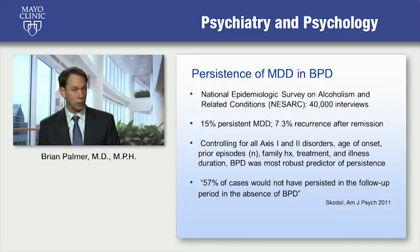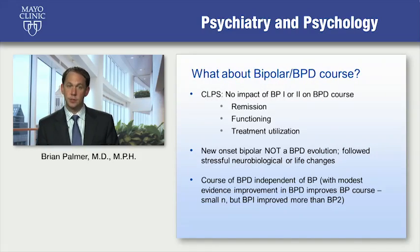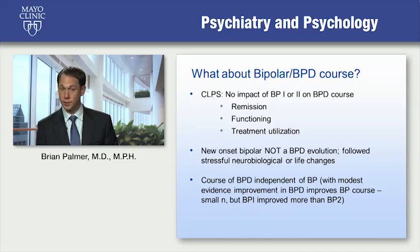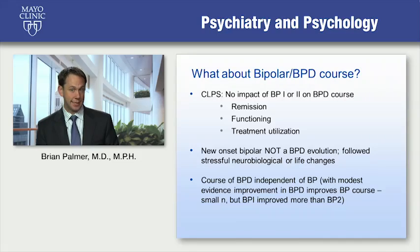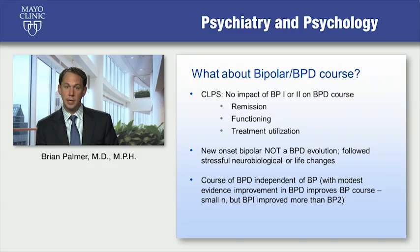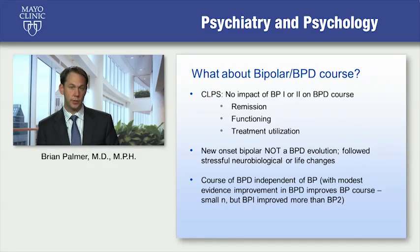Regarding bipolar and borderline, a reanalysis of the CLPS data suggests that bipolar I or II has actually no impact on borderline course in terms of remission, functioning, or treatment utilization — the same finding as with unipolar depression. New-onset bipolar was not a borderline evolution. Unlike the depression findings, however, the course of bipolar is generally independent of borderline, with only modest evidence that improvement in borderline improves the bipolar course. Bipolar I seemed to improve more than bipolar II once borderline symptoms achieved remission.